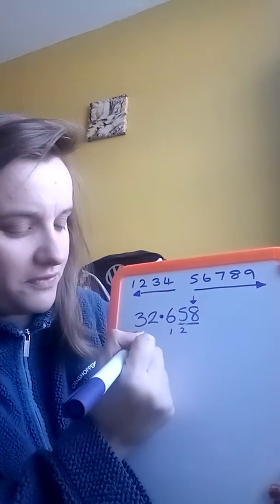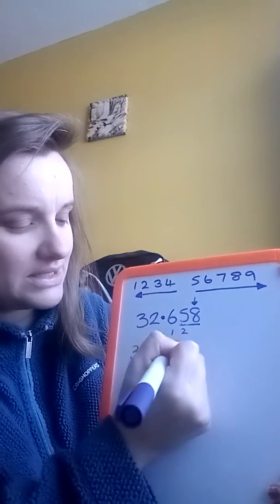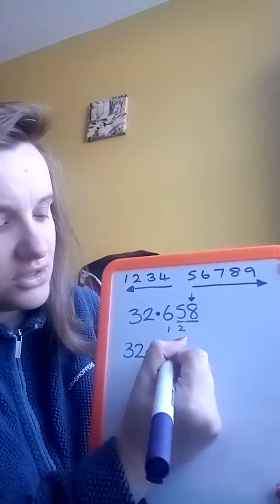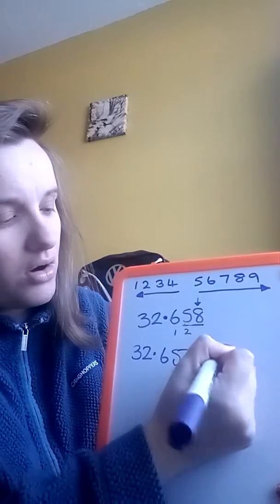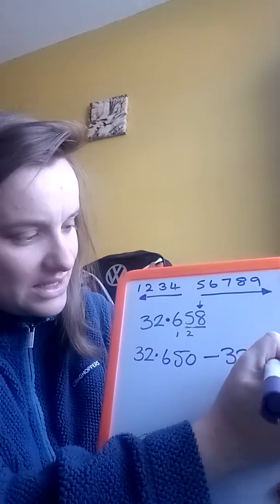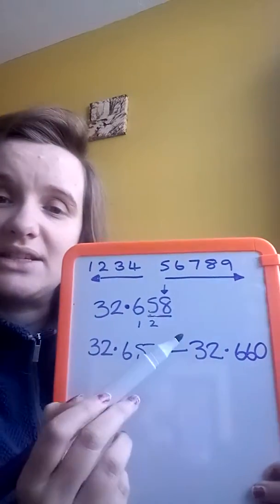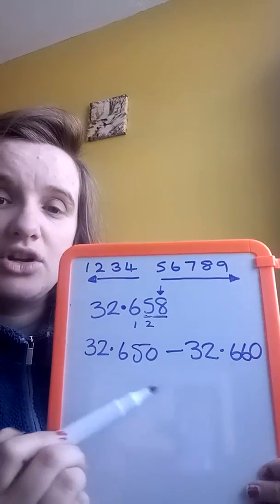So remember as we did before, we had the number, so 32.6 and it would be 32.650 or we can round up to 32.660, okay. And it's the number eight that decides which one it's closer to.